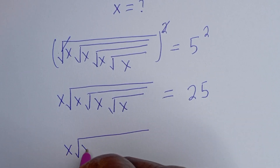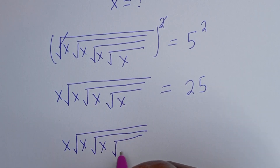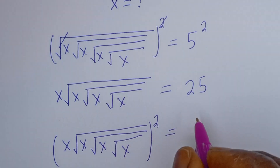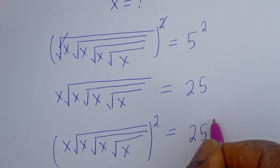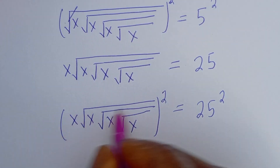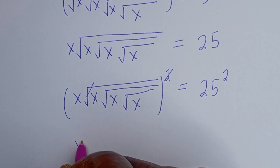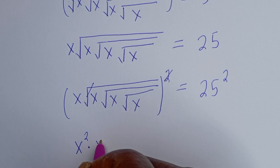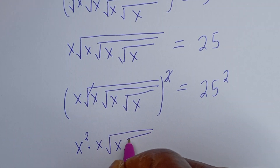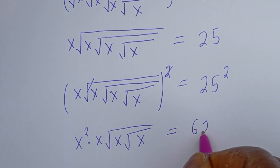Squaring both sides is equal to 25 squared. This will cancel, and here we have s squared multiplied by s times square root of s times square root of s, which is equal to 625.